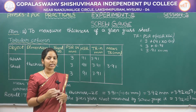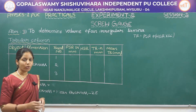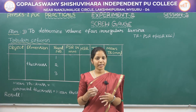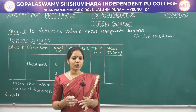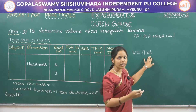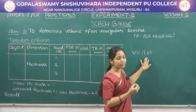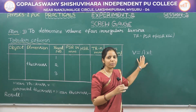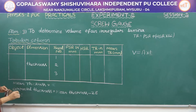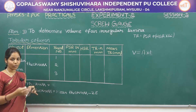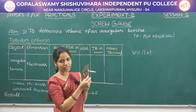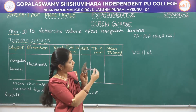Next our aim is to determine the volume of an irregular lamina using screw gauge. It is not possible to measure the volume of the lamina directly — we can measure only its thickness. To find the volume we use: volume equals area into thickness. The thickness is measured by the screw gauge and the area is calculated using a graph sheet. Here the object is the irregular lamina and the dimension is thickness. Place the lamina in between the studs and rotate the screw outwards until we hear a sound.